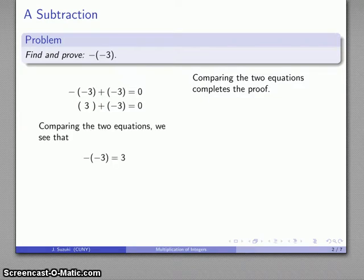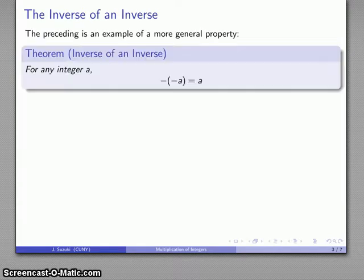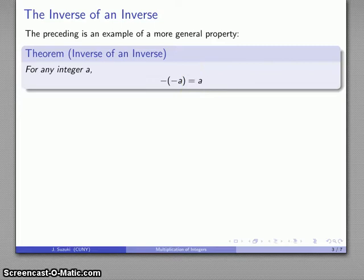So that tells me that negative negative 3 must be equal to 3. This is actually a much more general property, and we can prove in general that the additive inverse of the additive inverse of a number is just whatever you started with.